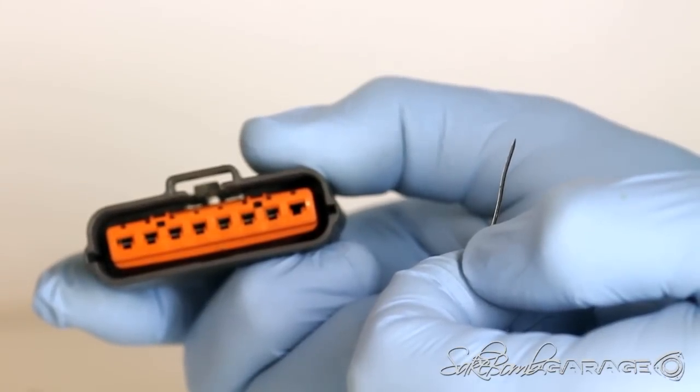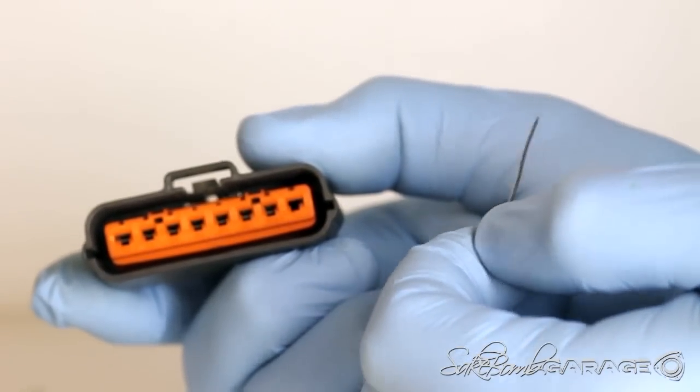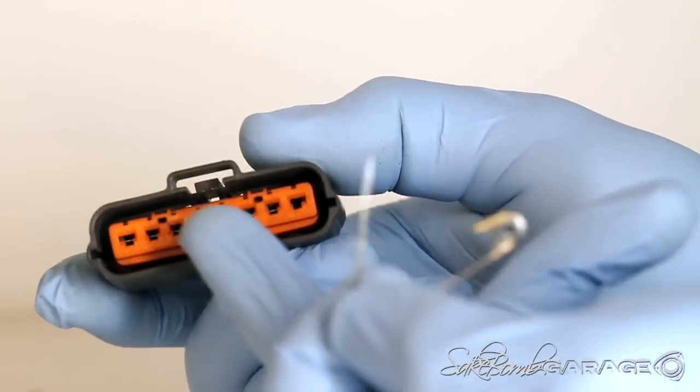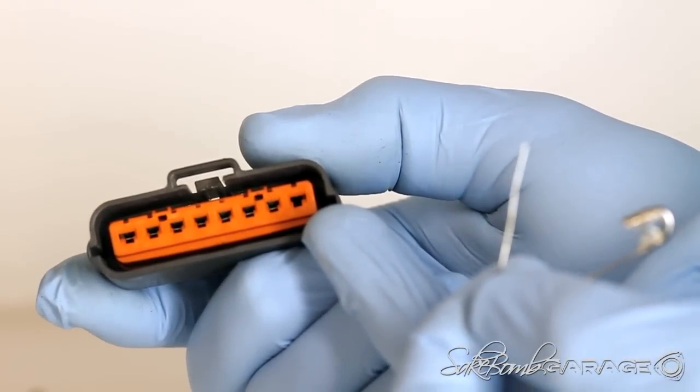Alright, so our first step to de-pin this Sumitomo connector for the igniter is we need to remove this orange pin separator or this orange cover here.